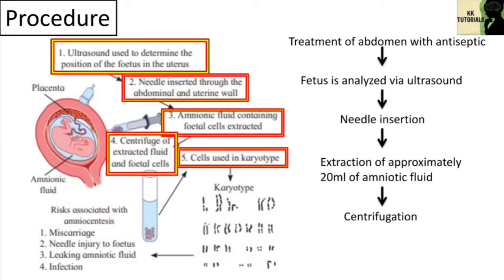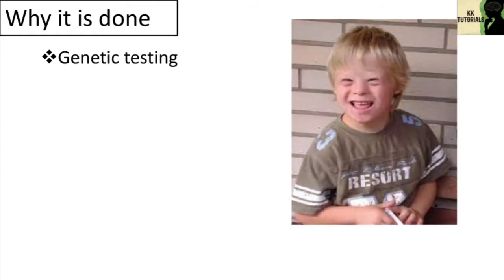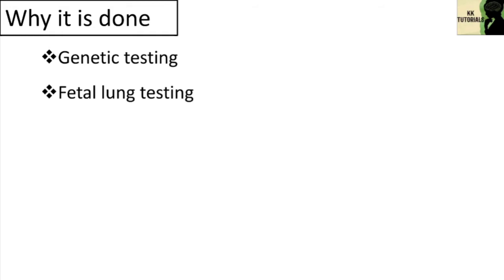The most common abnormalities detected are Down syndrome, Edwards syndrome, and Turner syndrome. Amniocentesis is done for genetic testing — it involves taking a sample of amniotic fluid and testing it for certain conditions such as Down syndrome. It is also used for fetal lung maturity testing to determine whether a baby's lungs are mature enough for birth.